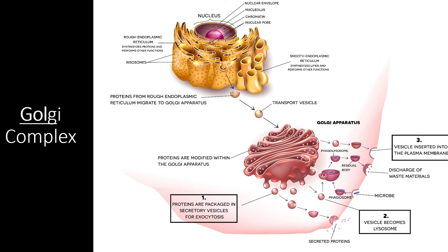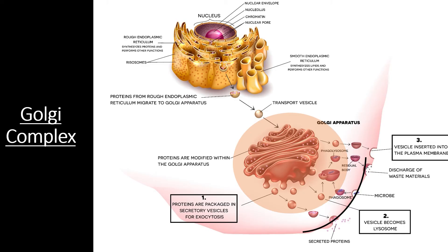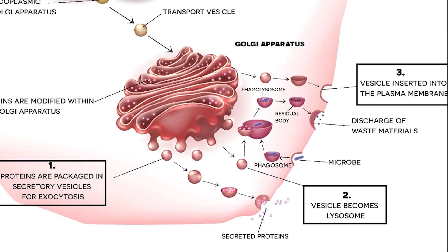The next organelle, the Golgi complex, is also made of a series of flattened sacs. However, these sacs are not physically connected to the endoplasmic reticulum. Rather, the Golgi complex sits closer to the cell membrane, where it carries out several important functions. Some proteins need even more modification than the endoplasmic reticulum can provide, or they need to be distributed to specific places on the cell membrane. These proteins are packaged up in a transport vesicle and are sent to the Golgi complex.